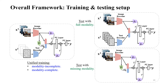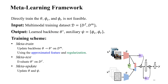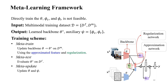Here is the overall framework. During training, our model leverages both modality complete and incomplete data, and the learned model can directly test with full modality or missing modality. We use theta to represent the backbone, phi_c as the approximation network, and phi_r as the regularization network. We further split the training dataset into two sub-datasets: a modality complete dataset DF containing all modality complete samples, and a modality incomplete dataset DM containing all incomplete samples.